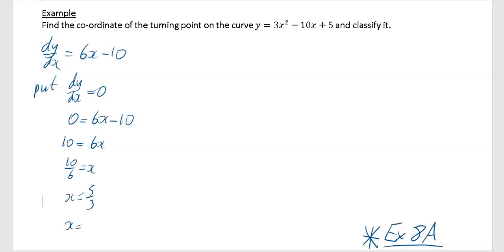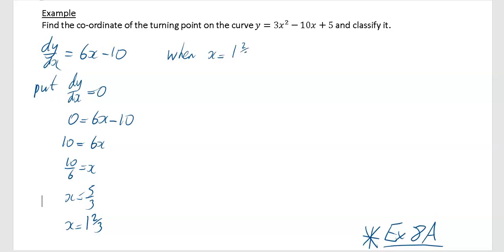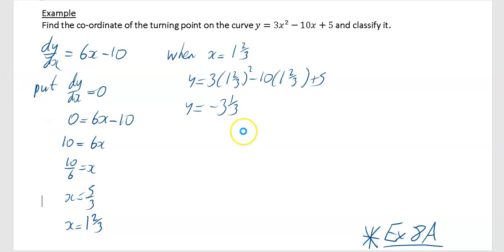x = 5/3, which as a mixed number is 1 and 2/3. Since we need the coordinates of the turning point, we find the corresponding y value. When x = 1⅔, y = 3(1⅔)² − 10(1⅔) + 5, which works out to be −3⅓. A common mistake is to stop here — you must differentiate again to classify the turning point.